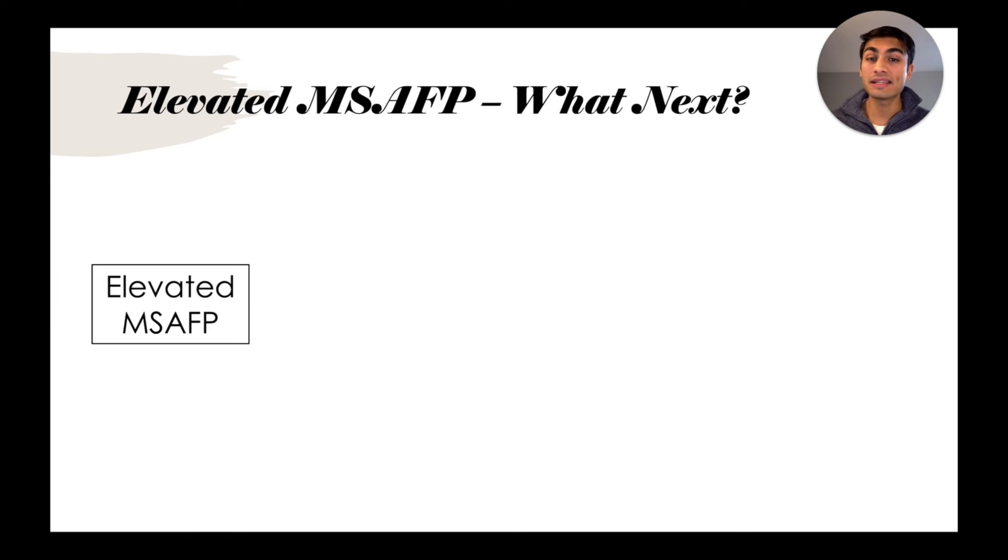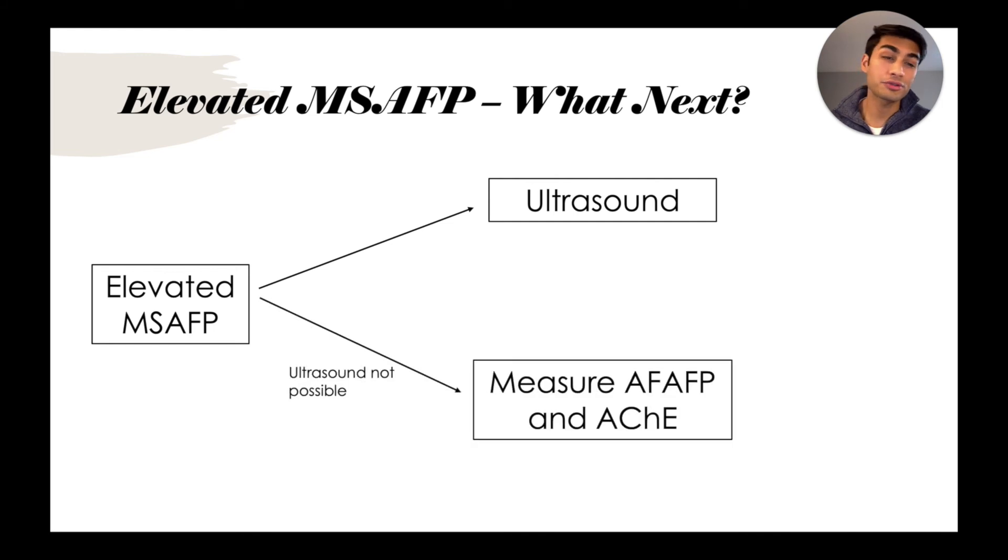So say we measure MSAFP and it's elevated—what are the next steps that are taken? Well, the first step is going to be a referral for ultrasound. However, ultrasound might not always be possible, so some alternatives are to measure the AFAFP, which stands for amniotic fluid alpha-fetoprotein. It's the same protein, but we're measuring it in the amniotic fluid instead of the maternal blood. Another protein that we can measure is acetylcholinesterase. And we might even proceed to this step if the original ultrasound is normal or uncertain.